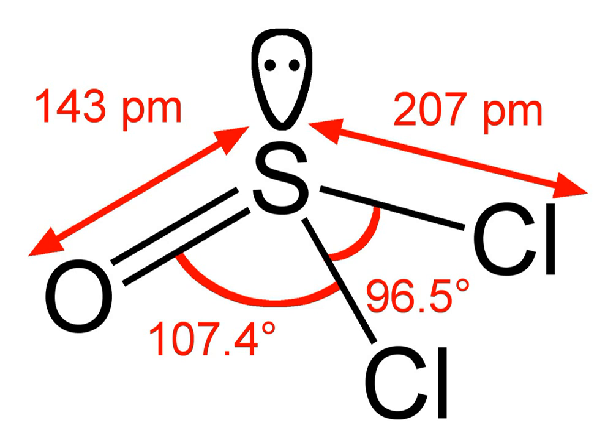The first of the above reactions also affords phosphorus oxychloride, phosphoryl chloride, which resembles thionyl chloride in many of its reactions.